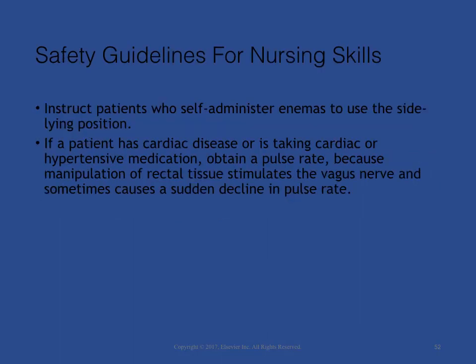Ensuring patient safety is an essential role of the professional nurse. To ensure patient safety, communicate clearly with members of the health care team, assess and incorporate the patient's priorities of care and preferences, and use the best evidence when making decisions. Instruct patients who self-administer enemas to use the side-lying position — not while sitting on the toilet, as this position results in the rectal tubing causing friction that could injure the rectal wall. If a patient has cardiac disease or is taking cardiac or hypertensive medication, obtain a pulse rate, because manipulation of rectal tissue stimulates the vagus nerve and can cause a sudden decline in pulse rate, increasing the patient's risk of fainting while on the bedpan, bedside commode, or toilet.